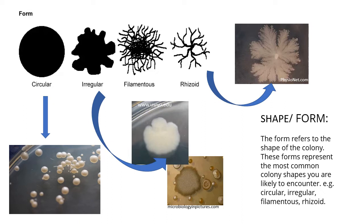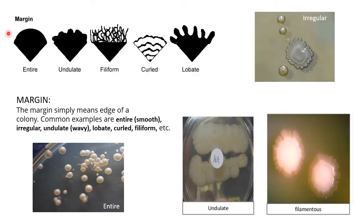Next is form, or the shape of the colony. It can be circular, irregular, filamentous, or rhizoid. Circular is the most common; irregular has no defined shape; filamentous and rhizoid are thread-like growth patterns.